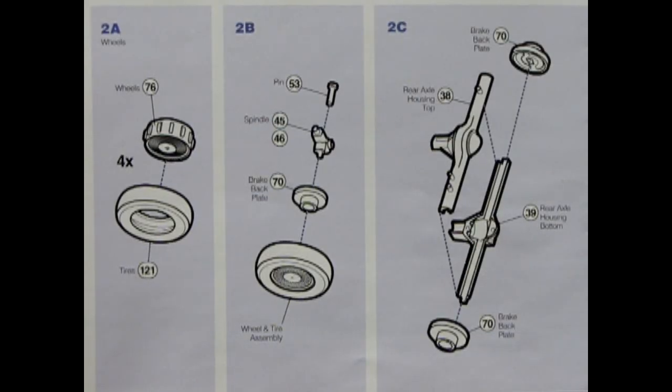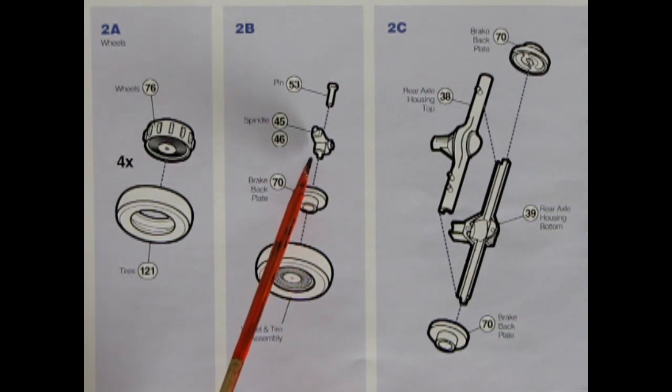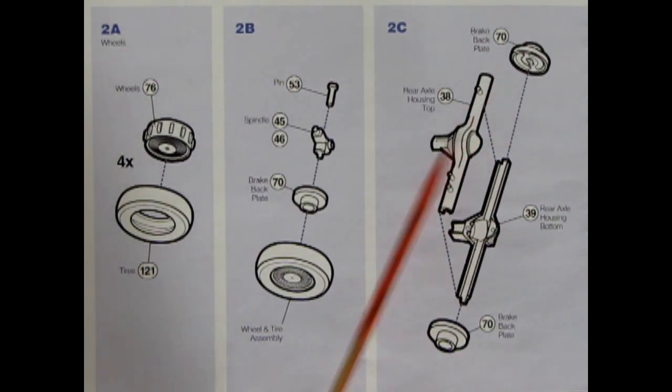Assembly step number two shows our wheels and axle going together. First off we have this wheel hubcap arrangement which goes into our single tire and you want to repeat that four times. Then you've got your wheel assembly going onto this brake backing plate as well as our spindle and it's all held together with this little pin. For the rear axle we have our differential in two pieces top and bottom going together as well as these brake backing plates.